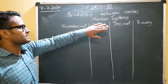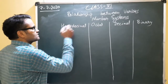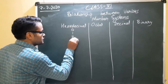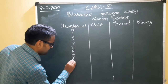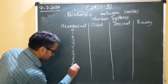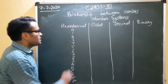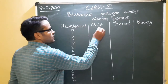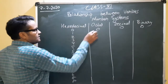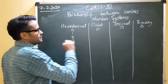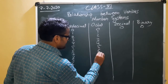The next topic is the relationship between the various number systems. We are comparing all number systems together. In hexadecimal we have 0 through 9 then A, B, C, D, E, F. The equivalent of 0 in octal is 0, in decimal is 0, and in binary is 0. Going from 0 to 7 in octal is straightforward: 1, 2, 3, 4, 5, 6, 7. In decimal we can count 0 through 15.